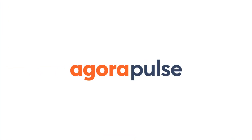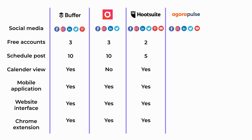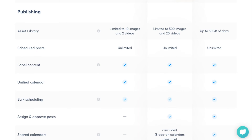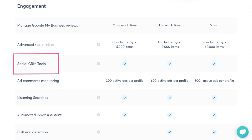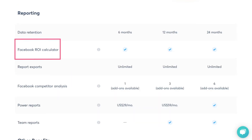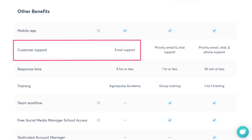The next one is Agorapulse. Agorapulse also provides three social media profiles; however, like Crowdfire, it does not support Pinterest, but it does support YouTube. The primary reason this tool ranks lower than the other three is the limit on scheduled posts — you can only schedule 40 posts each month, which can become a concern if you post more frequently. Although Agorapulse provides features like labeled content, advanced social inbox, ad comments monitoring, social CRM tools, and a Facebook ROI calculator. It also supports one-month data retention and provides email support. So if you want these features and don't post more than 40 times a month, it's an excellent tool for you.